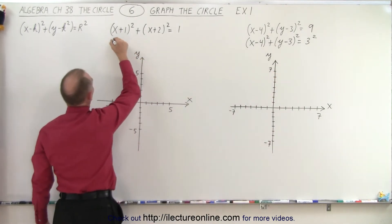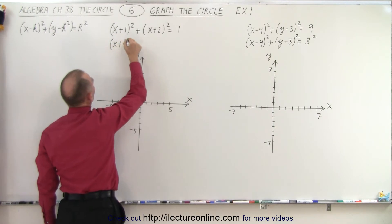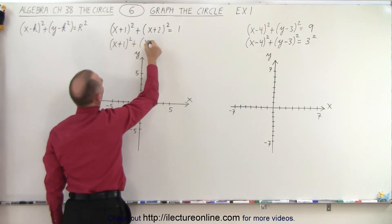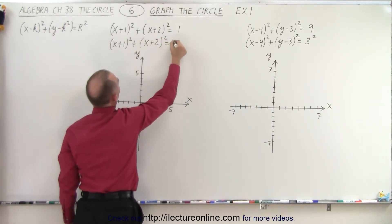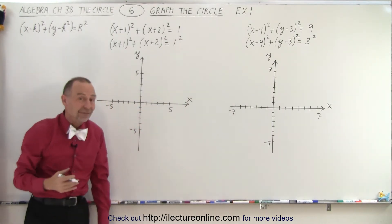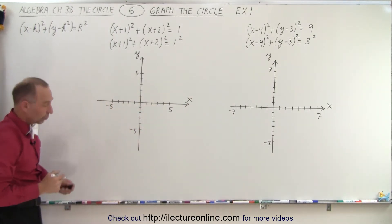And the same over here, we can say that this can be written as (x+1)² + (x+2)² = 1². Again, you can clearly then see that the radius equals 1.